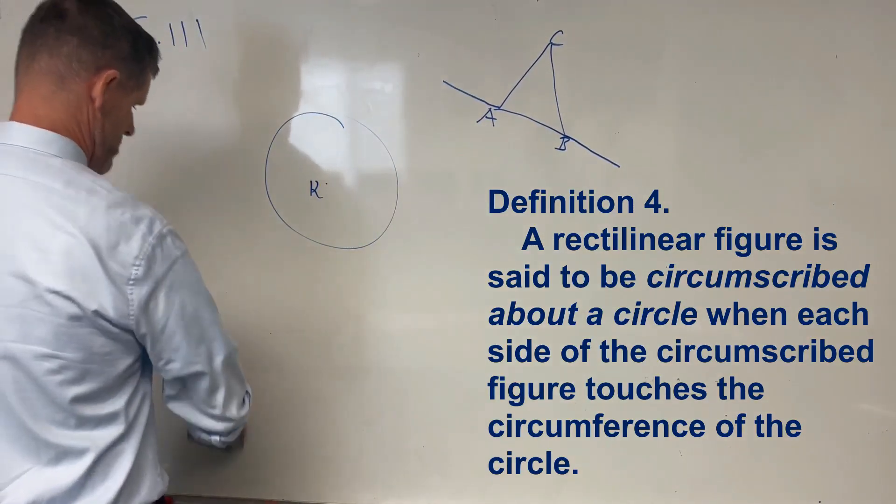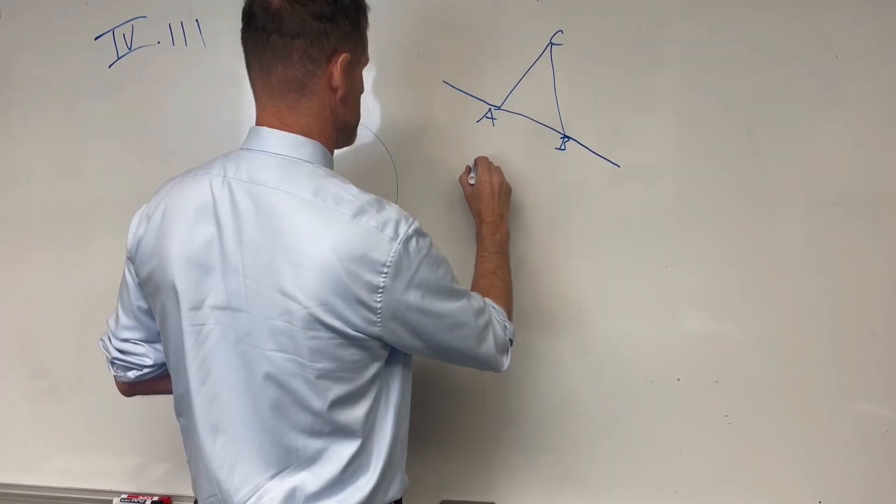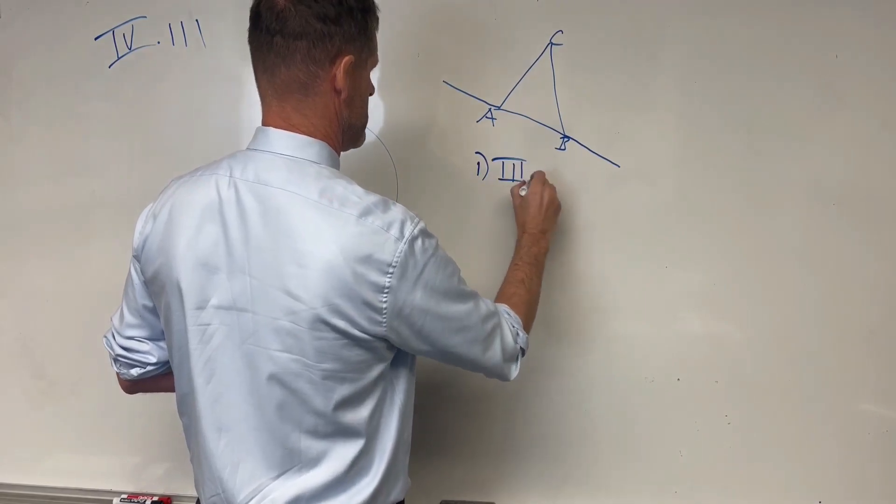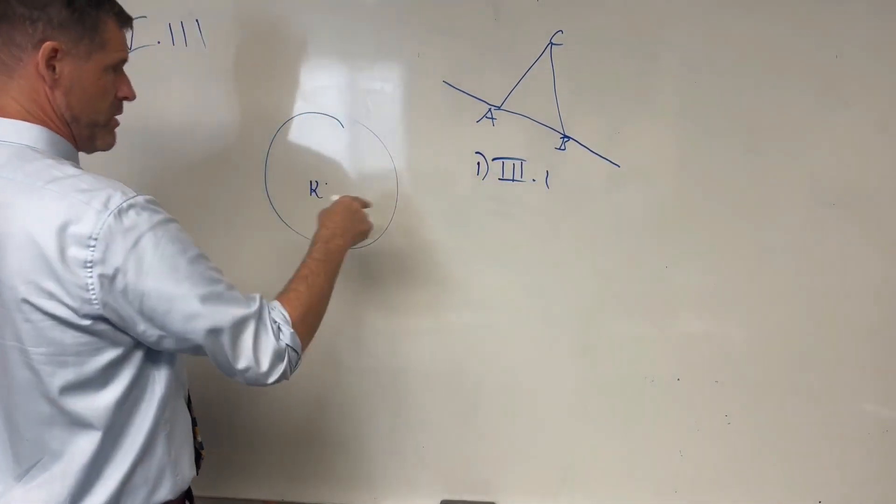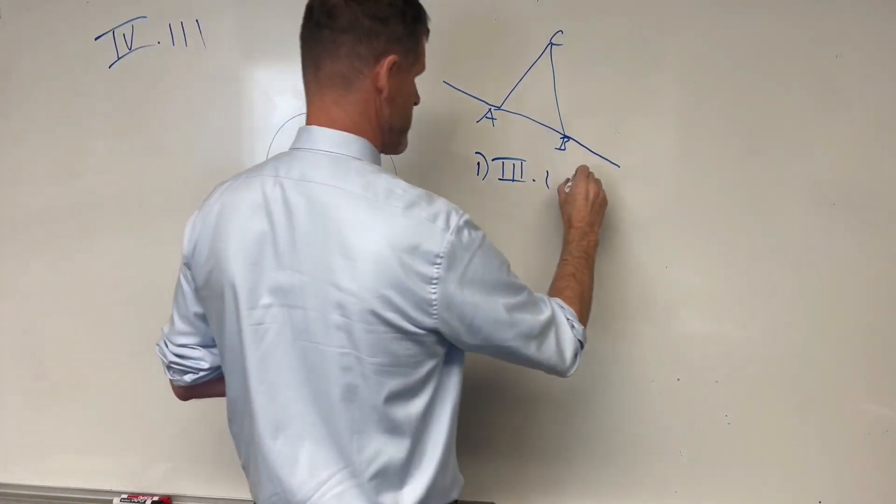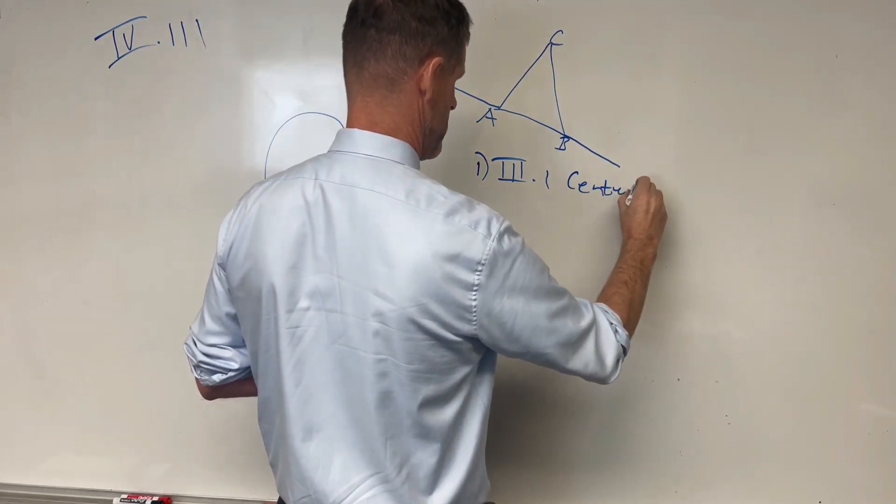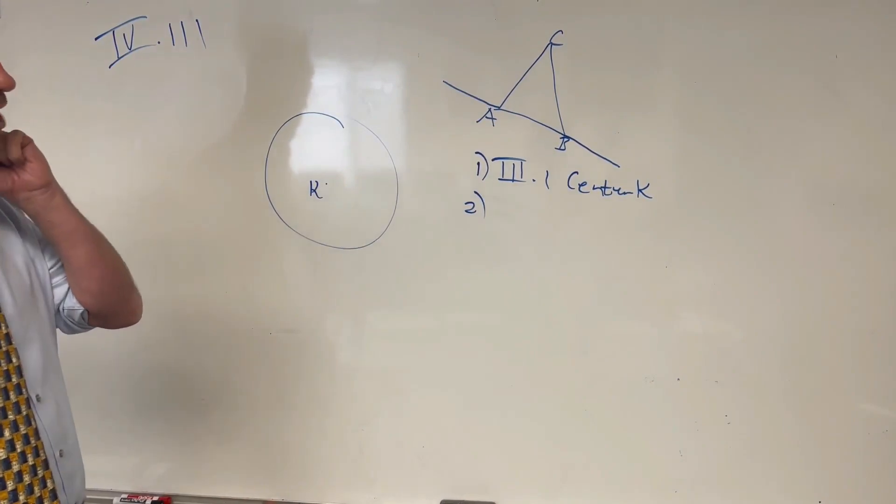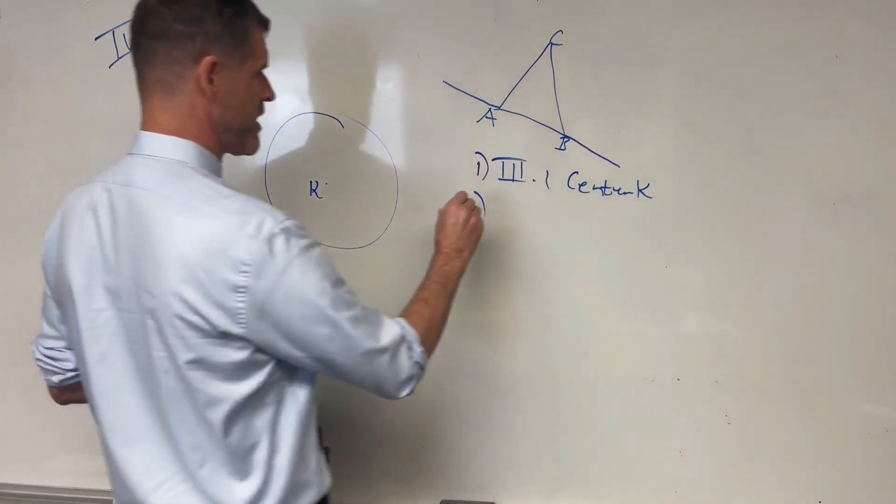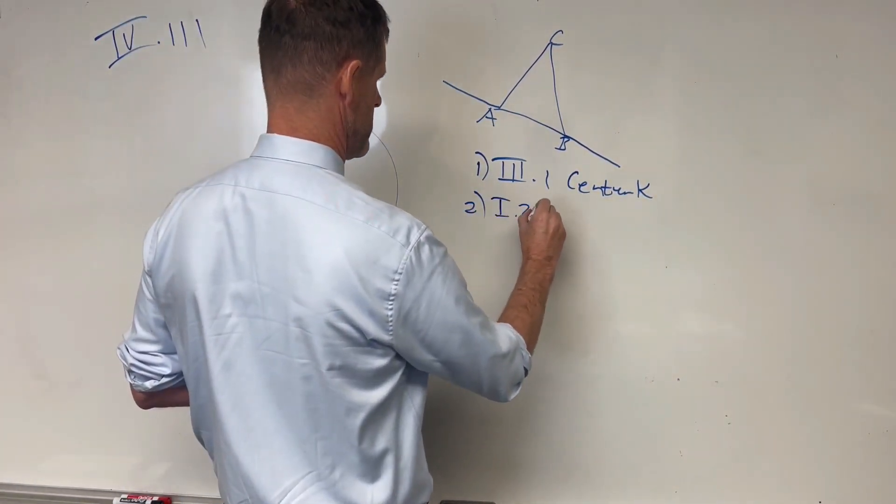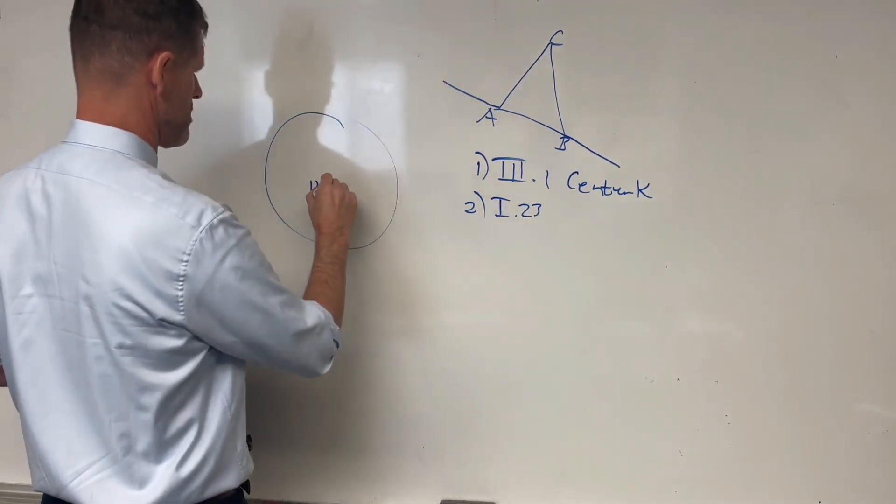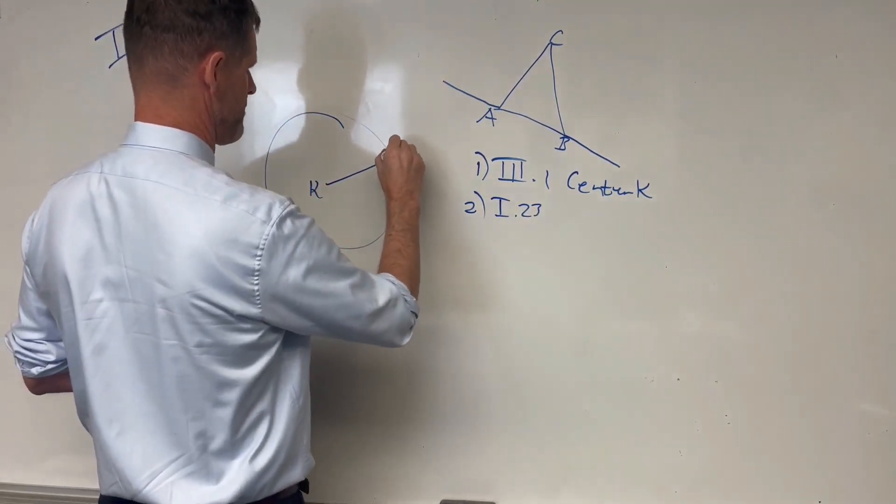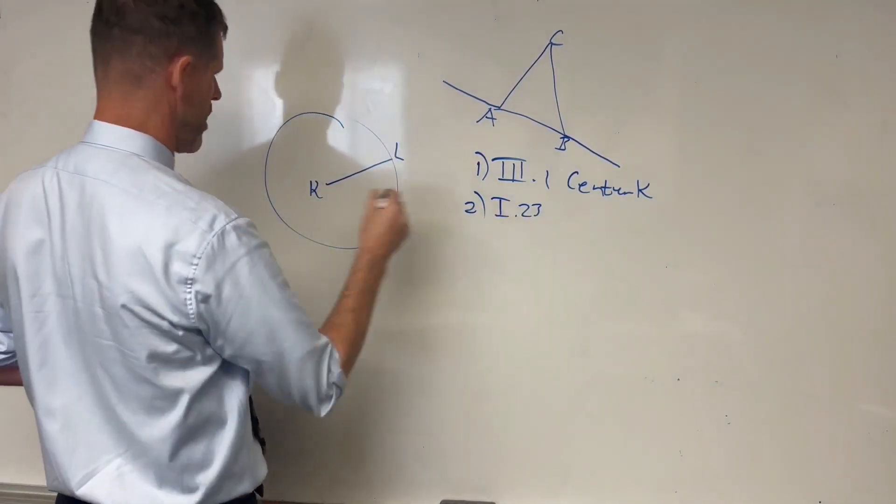I'm actually going to move this over here. So Book 1, that's right, Prop 1, Book 3, we've got our center K. And then we utilize Prop 23 of Book 1 a couple of times. And then we've drawn, we'll draw KL at random.